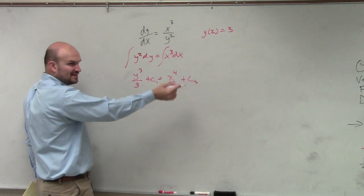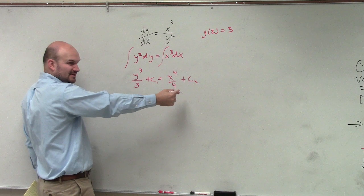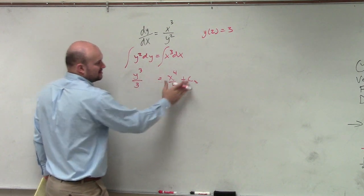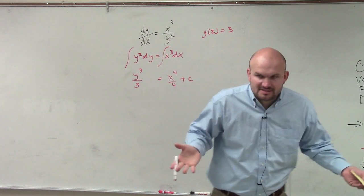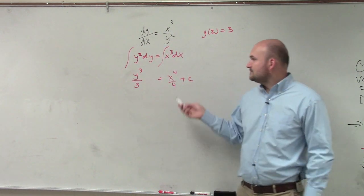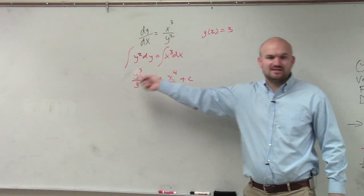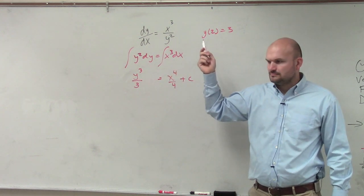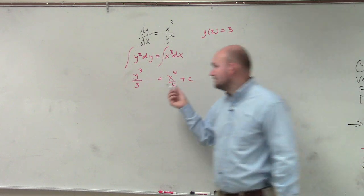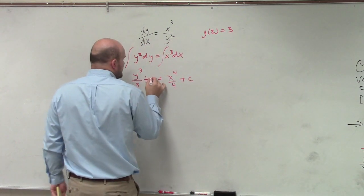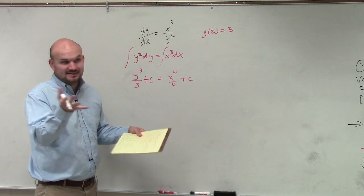instead of just writing the plus c, what's the first thing we do? I'm going to subtract the c on both sides anyways. So what I'm just going to do is just write it as one c, right? Because it's just a number, like some number that we don't know. So instead of doing plus c on both sides, what did you do with c? No, but what I'm saying is we don't know what c is, right? c can represent any constant.